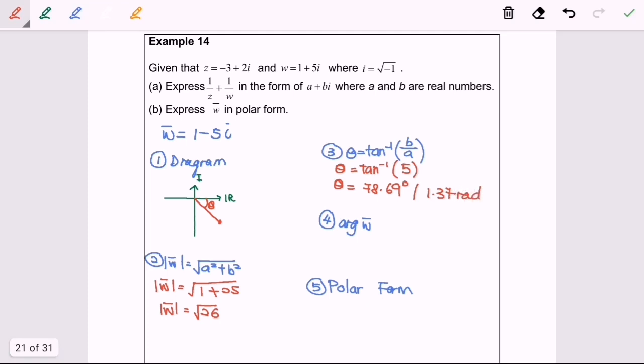Do remember, we only take three significant figures. So now we are going to find the argument of w conjugate. So where is the argument of the conjugate of w? So here will be the location, the argument. So in this case, the answer will be negative 1.37 radian.